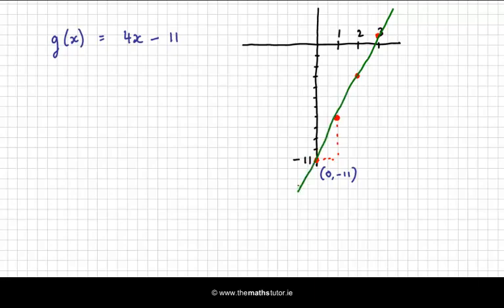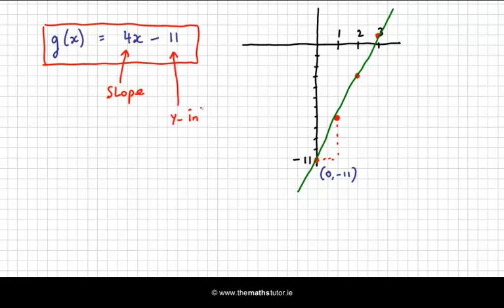So in any linear function, the 2 pieces of information we need are the slope and the y-intercept. Once you have those 2, it's very easy to sketch them. Well, when I say very easy, perhaps we need to look at another couple of examples.